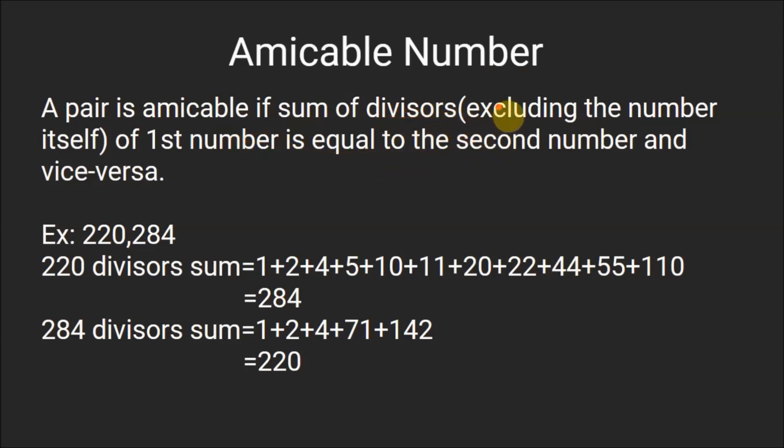But the divisors should exclude the number itself. For example if the pair is 220 and 284, then the divisors of 220 will be 1, 2, 4, 5, 10, 11, 20, 22, 44, 55, and 110 and the sum will come out to be 284.